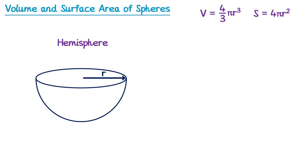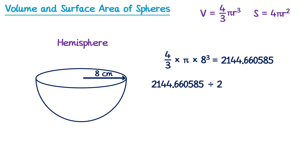Let's work out the volume and surface area for a hemisphere with a radius of 8 centimeters. For the volume, we use the normal sphere formula: volume equals 4/3 multiplied by π, multiplied by 8 cubed. But since this is a hemisphere — half of a sphere — we divide that result by 2. Rounded to one decimal place, the volume is 1072.3 centimeters cubed.